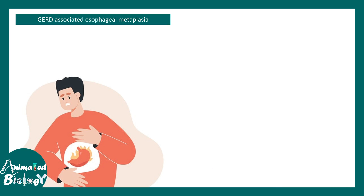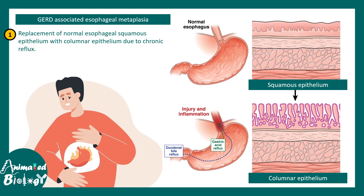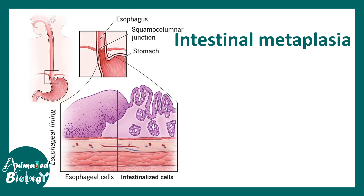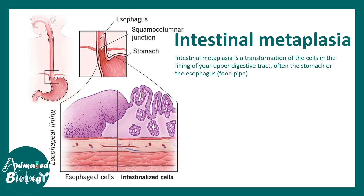Another example is GERD, an acid reflux problem where squamous epithelia get changed into columnar epithelia, because changing this epithelial architecture helps the body handle stress better. Also, intestinal metaplasia happens in prolonged acid reflux, where esophageal cells become more intestine-like just to cope with the stress.